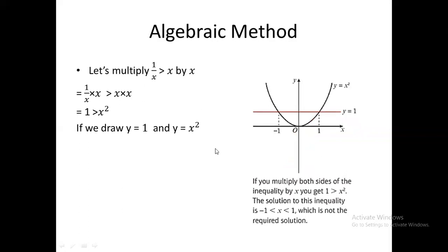Now let's take the same inequality and try some modifications. You know that if you have 1/x > x, you might think to simply cross-multiply. But is that possible? If I multiply both sides by x, you get 1 > x². Why might this be wrong? That's what we need to understand.